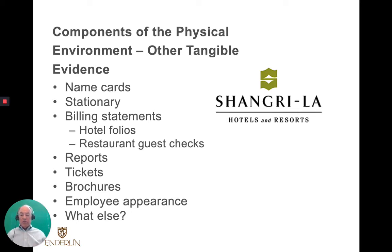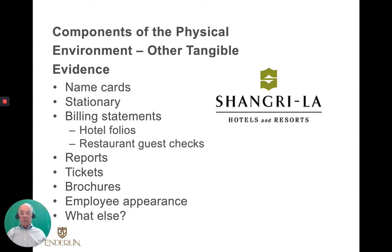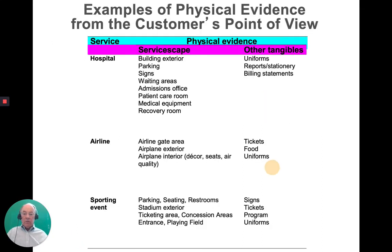Billing statements, hotel folios, guest checks — we've automated a lot of this, so it may not be as relevant in some cases as it used to be. But you're still looking at the representation of what you're sending out, even digitally. Reports, tickets, brochures, employee appearance — what other things show the tangibleness from the intangible aspect of the service? That's really what we're talking about here.